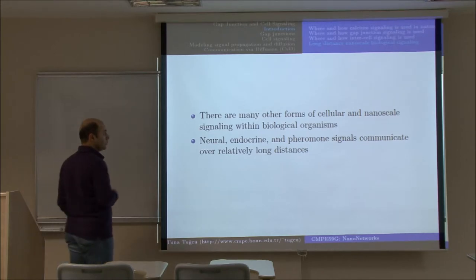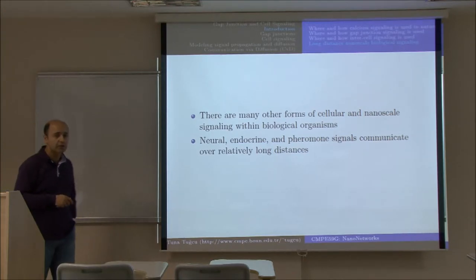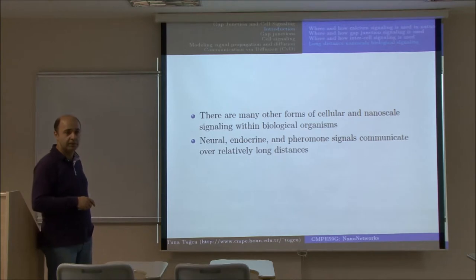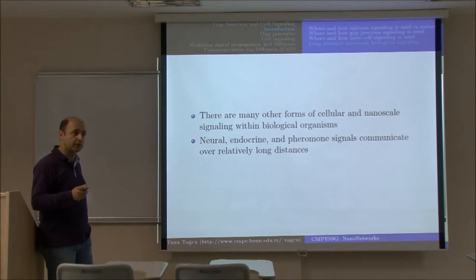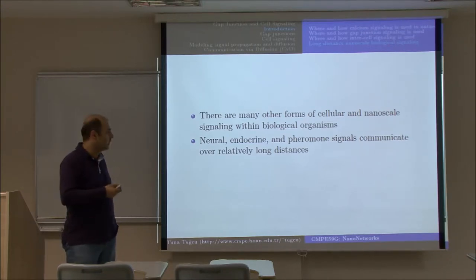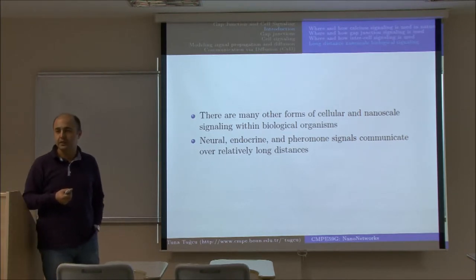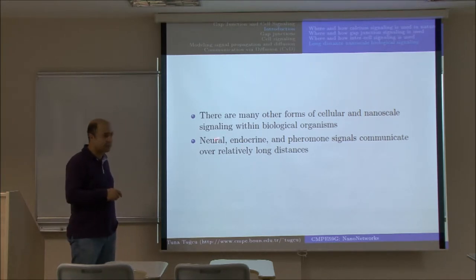There are also many other forms of cellular and nanoscale signaling among biological organisms, like neural communications, endocrine systems, and pheromone signals. All these can be used to communicate, but these three systems operate over longer distances compared to diffusion and gap junctions. They still make use of diffusion, but this time we're looking at longer distances. Neural systems use neurons — that's where the name comes from.